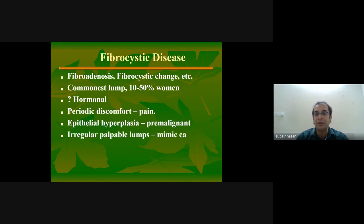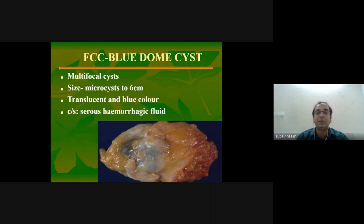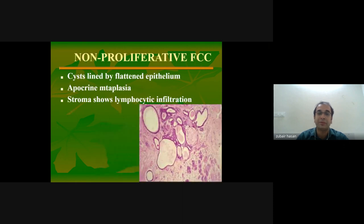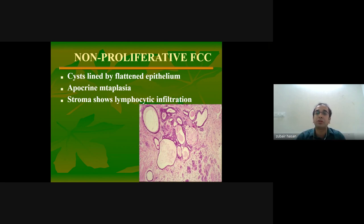In fibrocystic change you have irregular palpable lumps. Grossly, it shows a bluish discoloration with a translucent blue color, having serous or hemorrhagic fluid, ranging from micro-cysts to six centimeters. Cysts are lined by flattened epithelium with apocrine metaplasia — snout-like cells coming out with secretions — and the stroma shows lymphocytic infiltrate.